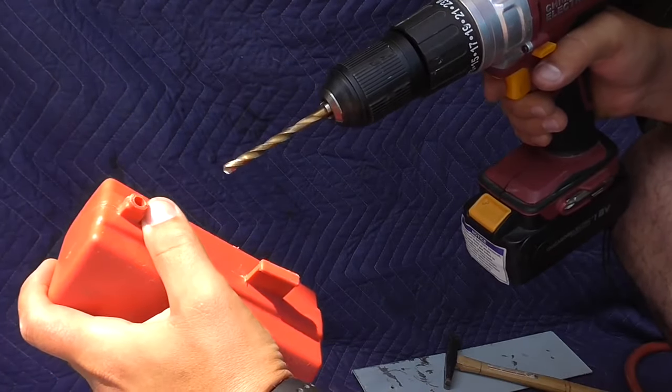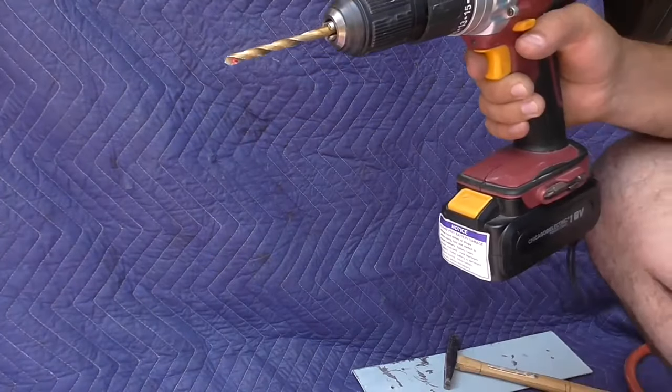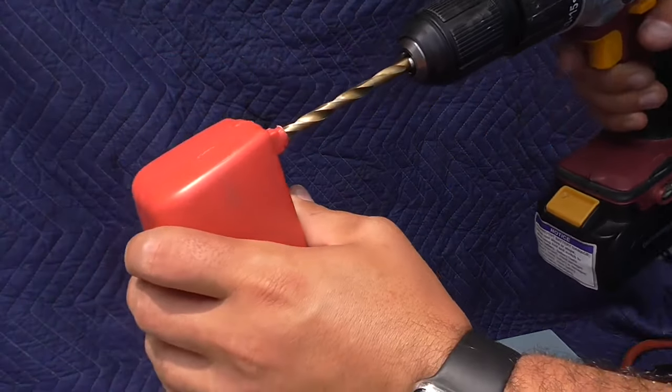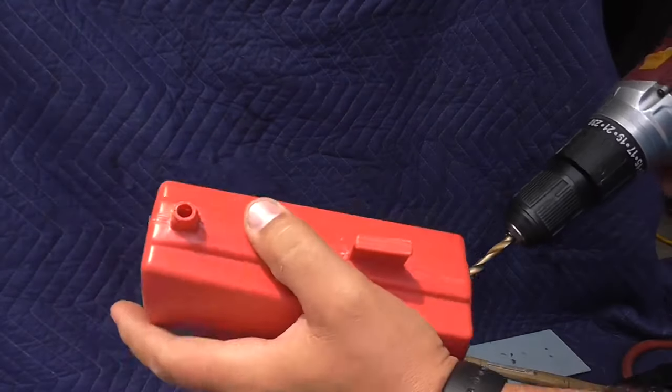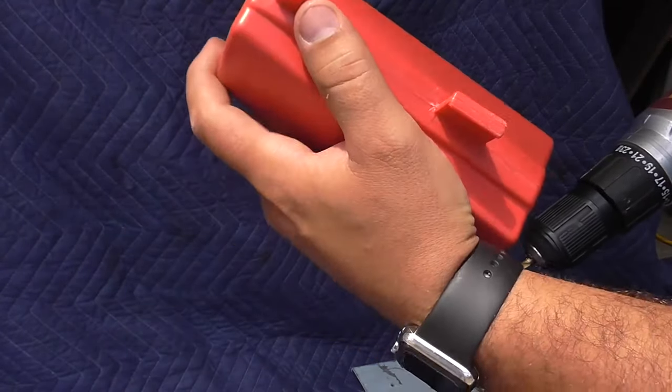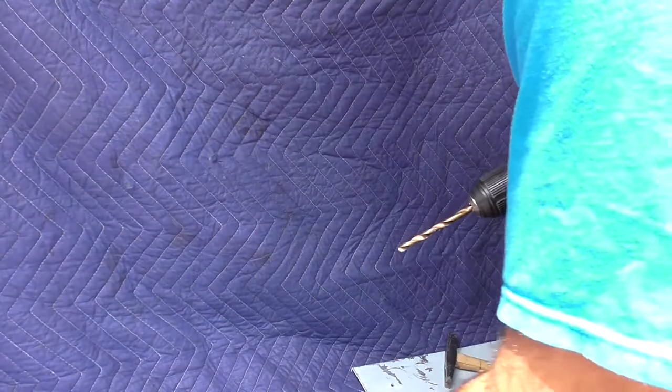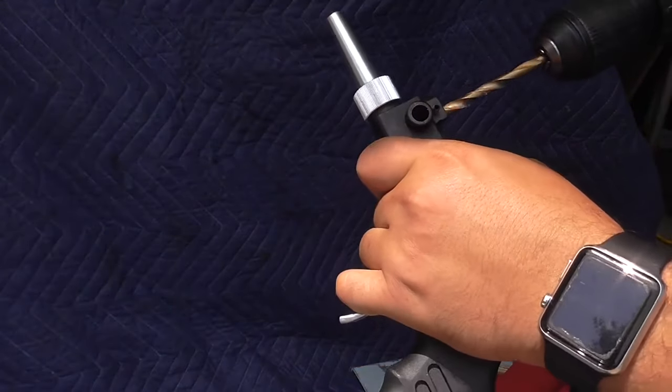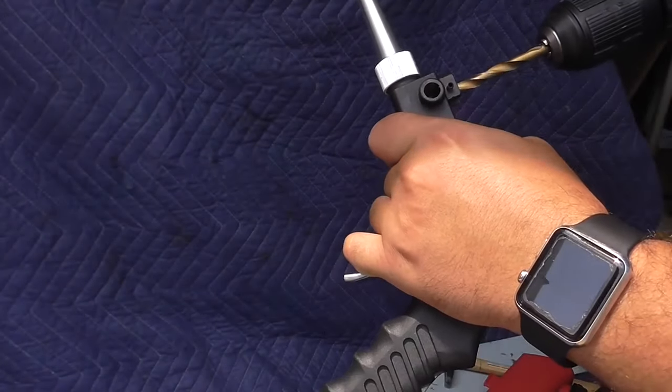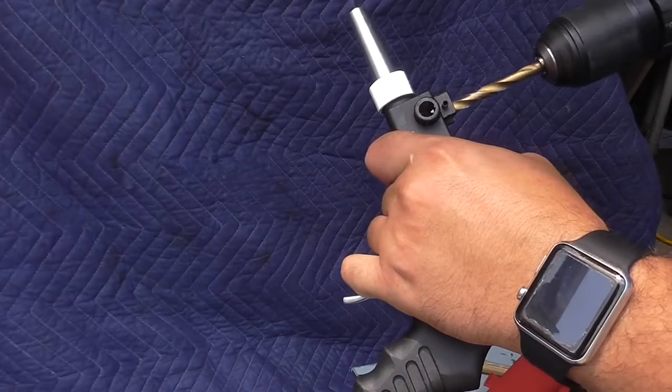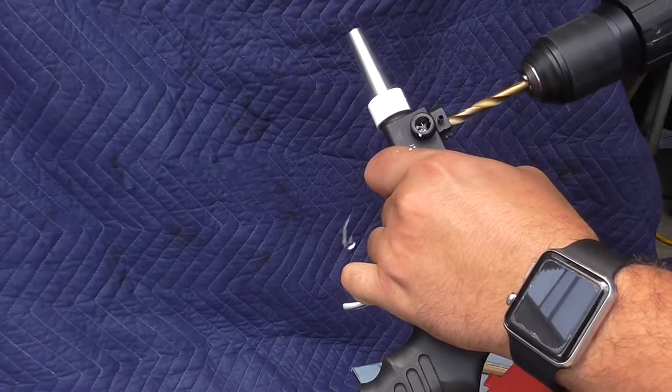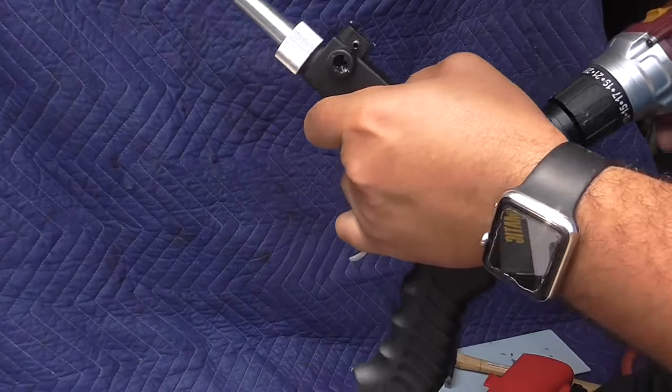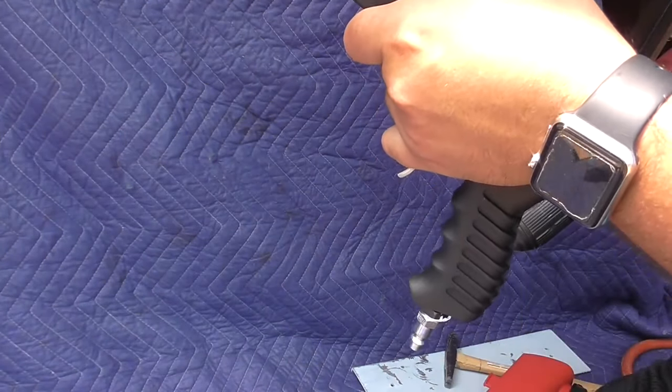You know what, I'm going to go the next size up. Alright, so I'm doing 17/64ths in the hopper, bigger than I was. And I'm going to drill it in the gun right here too. Alright, that looks like all the way to the bottom.